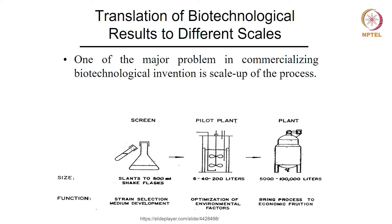Then, once you take it to the lab scale reactor level, the next stage is the pilot scale. At the pilot scale, we check the reproducibility of the results obtained at the lab scale reactor. The working volume at pilot scale ranges from 5 to 200 litres, depending on the kind of production platform you are using, the kind of product, and the value of the product.